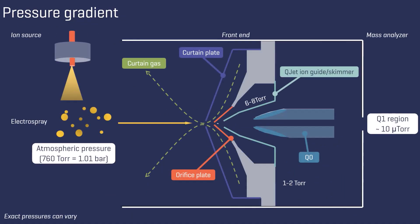As illustrated here, ions experience a pressure gradient during their transition from ionization at atmospheric pressure to entry into the mass analyzer, which operates at approximately 10 microtorr.